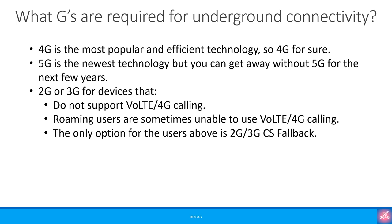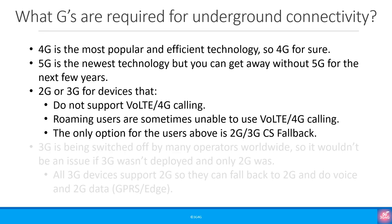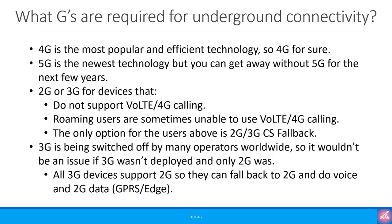You also need one of the legacy technologies like 2G or 3G for devices that do not support 4G calling. There are many reasons for this — such as support of on-device, SIM, operator, or in case of roaming — so you need 2G or 3G CS fallback support. We have a tutorial on 4G voice calling that explains some of these things. 3G is being switched off by many operators worldwide and even in the UK, so it is not an issue if 3G wasn't deployed.